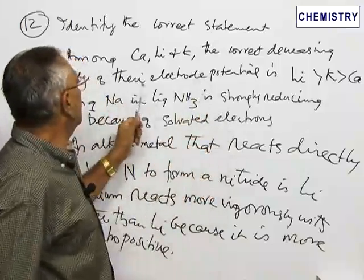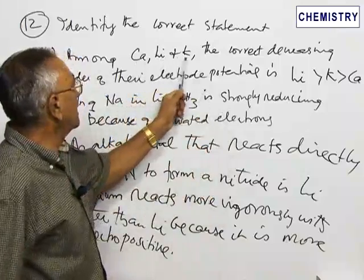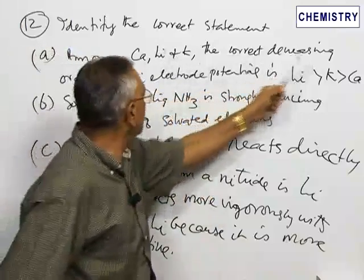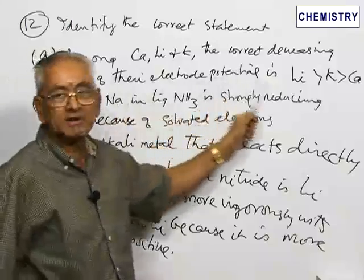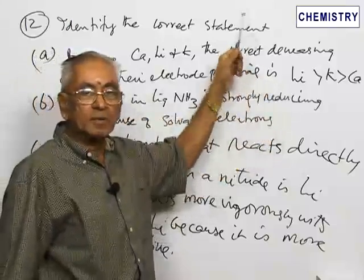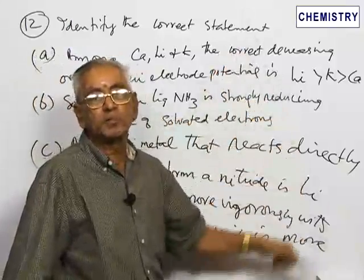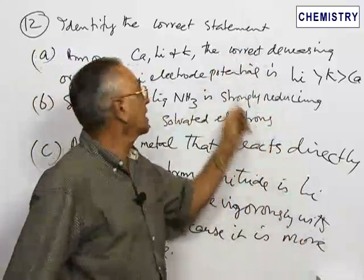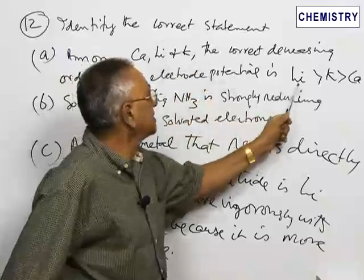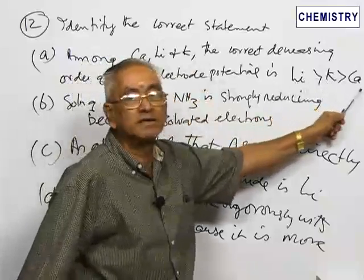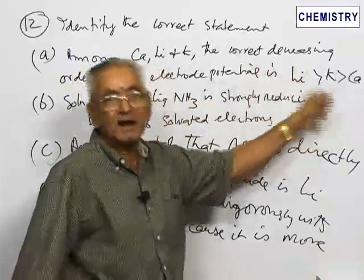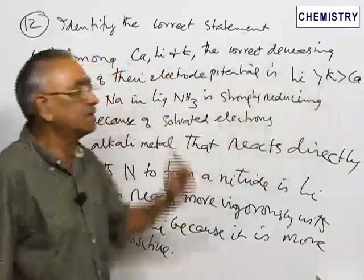The first statement says: among calcium, lithium, and potassium, the correctly decreasing order of their electrode potential is... In the electrochemical series, the various elements are arranged on the basis of their electrode potential. The correct order among these three elements is lithium higher than potassium, which is higher than calcium. That is a correct statement. So the first statement is correct.